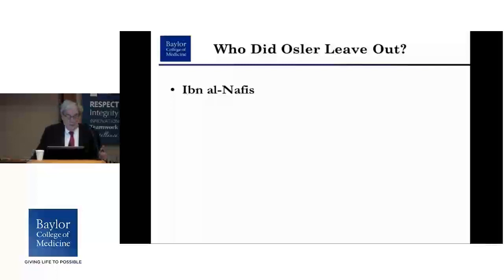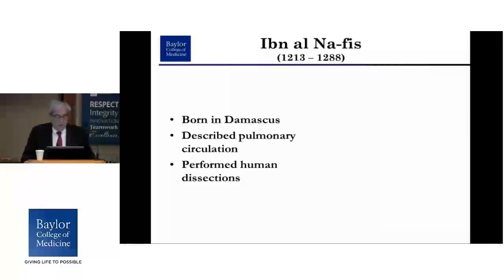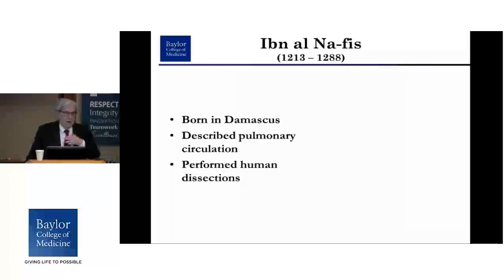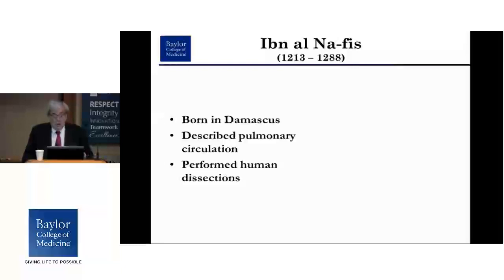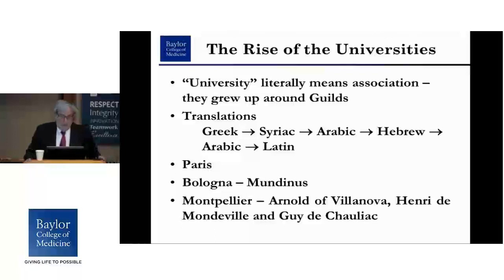Who did Osler leave out here? He leaves out Ibn al-Nafis, who was born in Damascus and is attributed with describing the pulmonary circulation. He took the view that blood ran from the right side of the heart into the lungs, picked up the pneuma or vital force, came back to the left side of the heart, and was then distributed. There is a question of whether he performed human dissections — in his world they were not condoned — but some people think he deduced this just from observing living individuals.